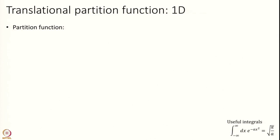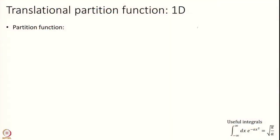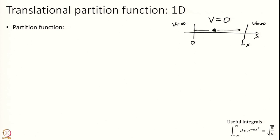Let us start with the translational partition function. Let us first do it in one dimension. Our world is in 3D, but doing the integral in 1D is easier and then we will generalize to 3D. Imagine I have a particle in a box from x equal to 0 to x equal to Lx. The potential is 0 inside and infinite outside, so effectively the particle is stuck inside this box of length Lx.